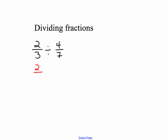I'm dividing 2 thirds by 4 sevenths, which means I could multiply 2 thirds by the reciprocal of 4 sevenths, which is 7 fourths.